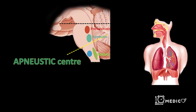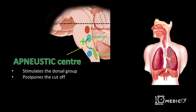Coming to the apneustic center, its basic function is to stimulate the dorsal group of neurons. This postpones the cutoff point of the ramp signals, resulting in increased depth of respiration but a lowered respiratory rate.